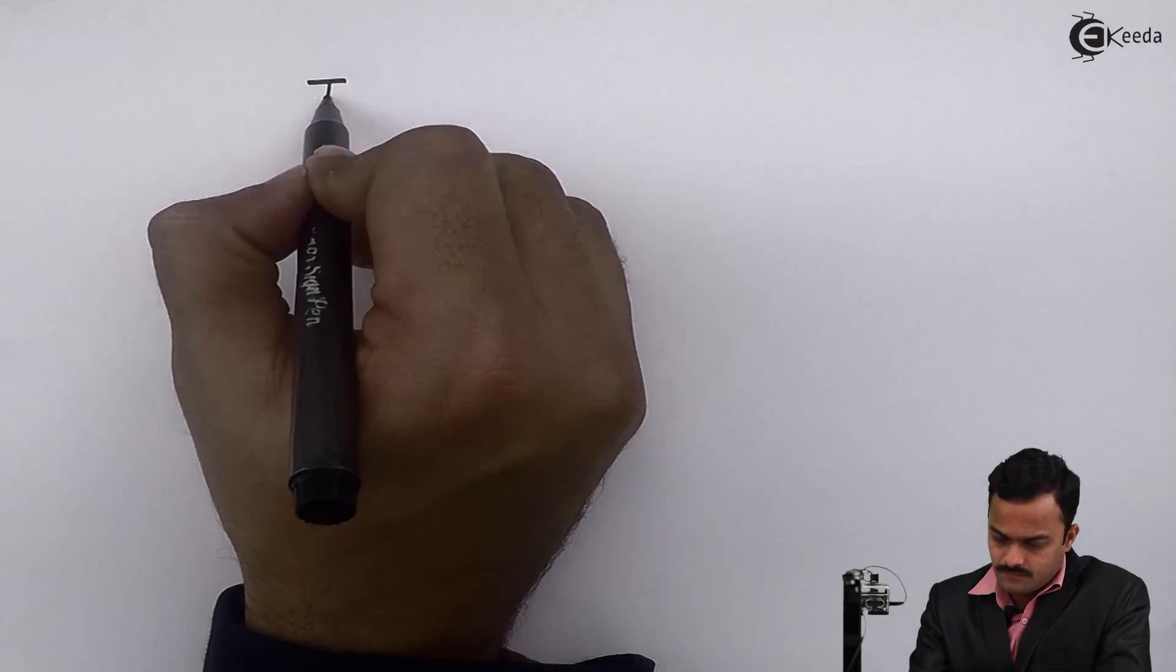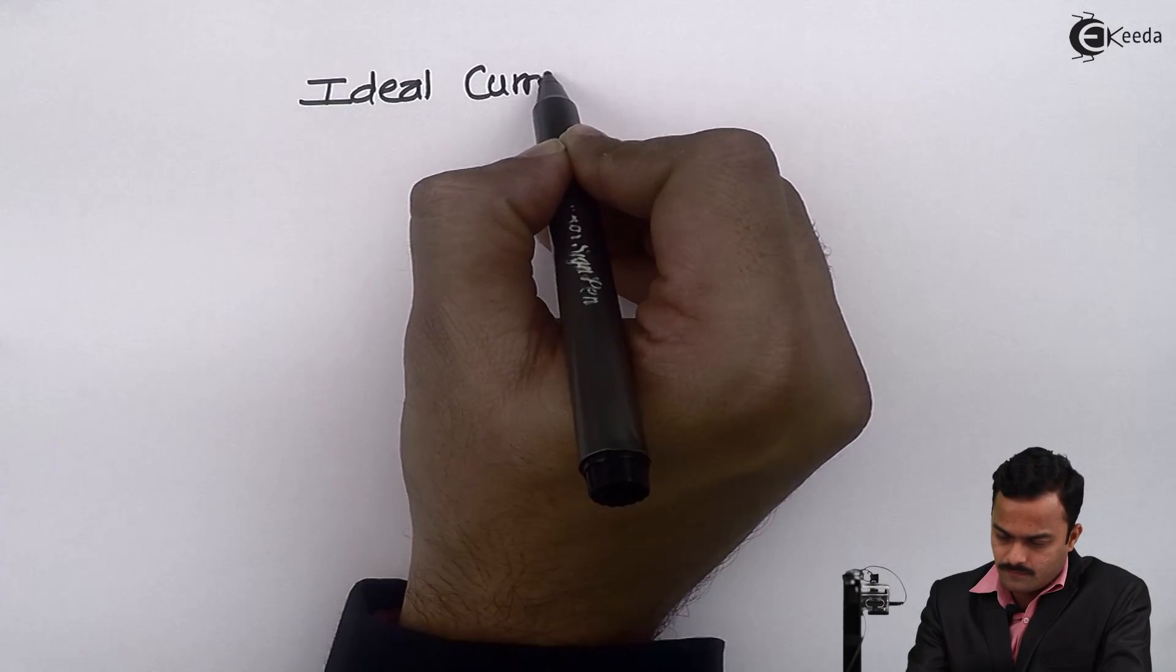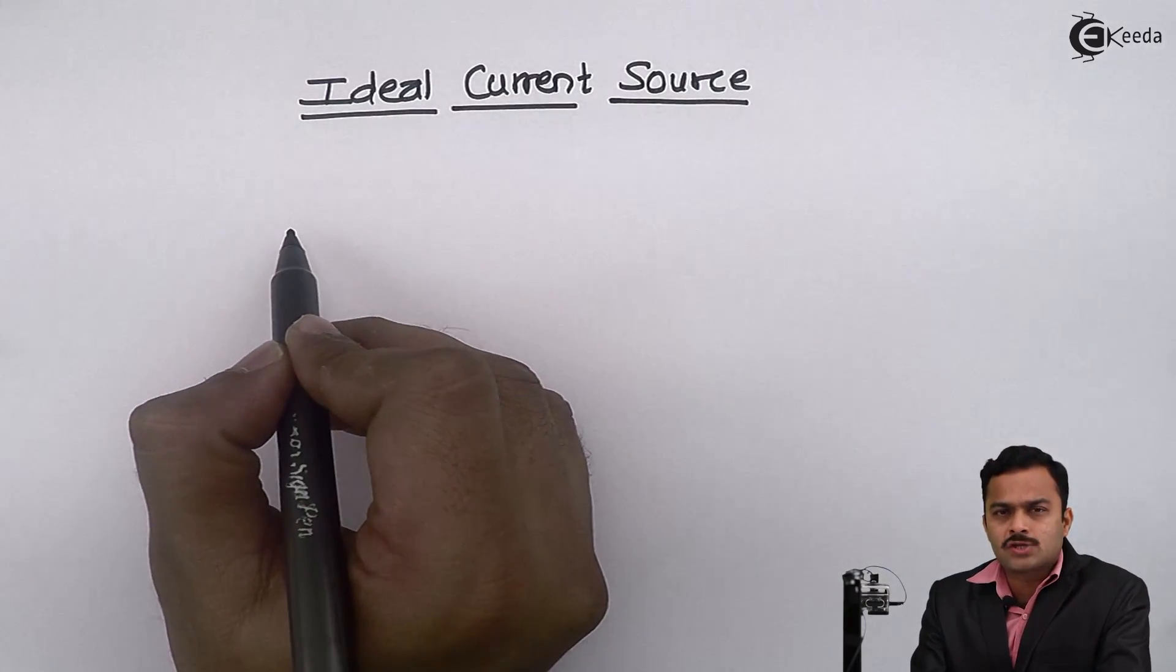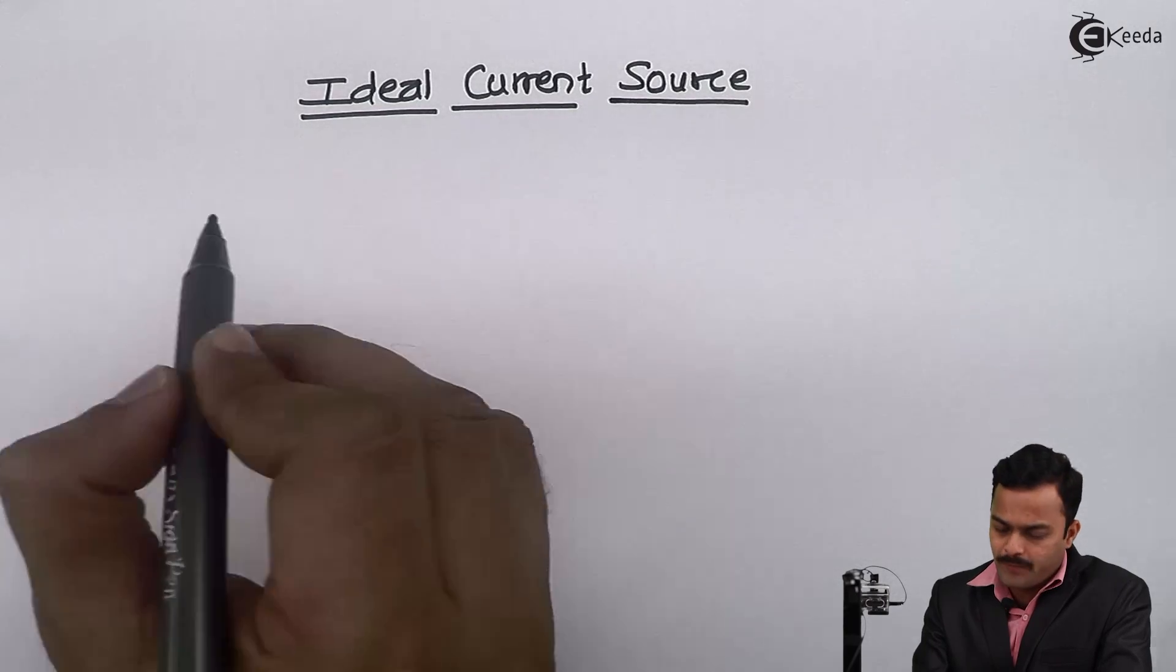Hello friends, in this video we are going to see the VI characteristic of an ideal current source. So I'm taking a current source of the value I ampere.